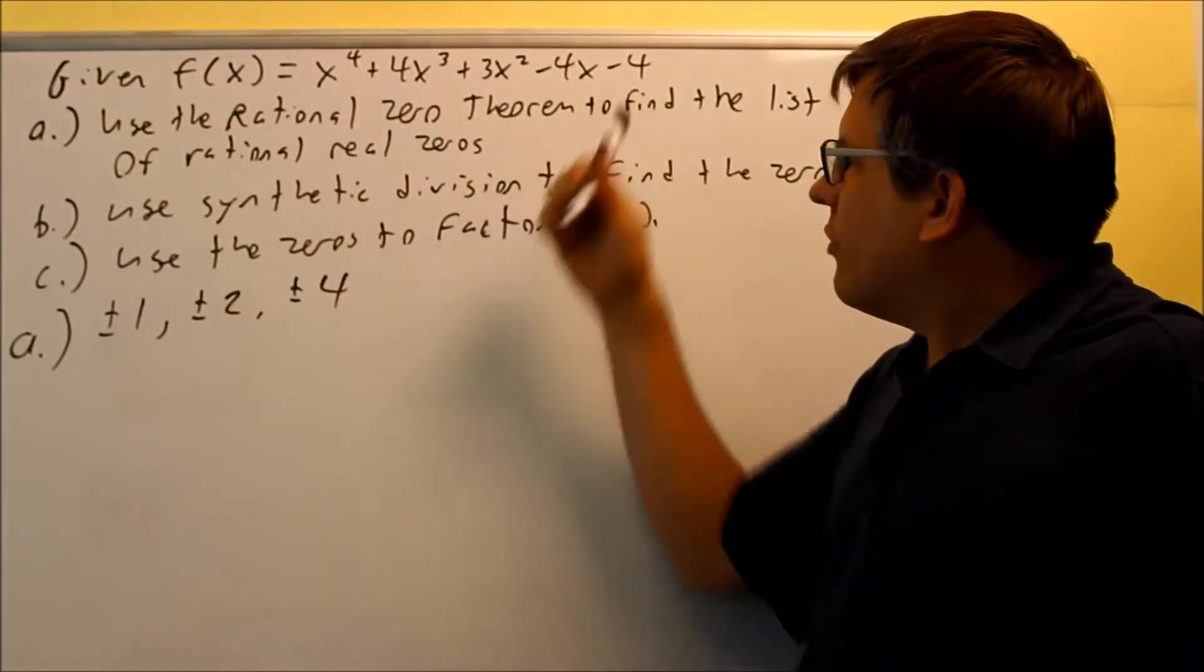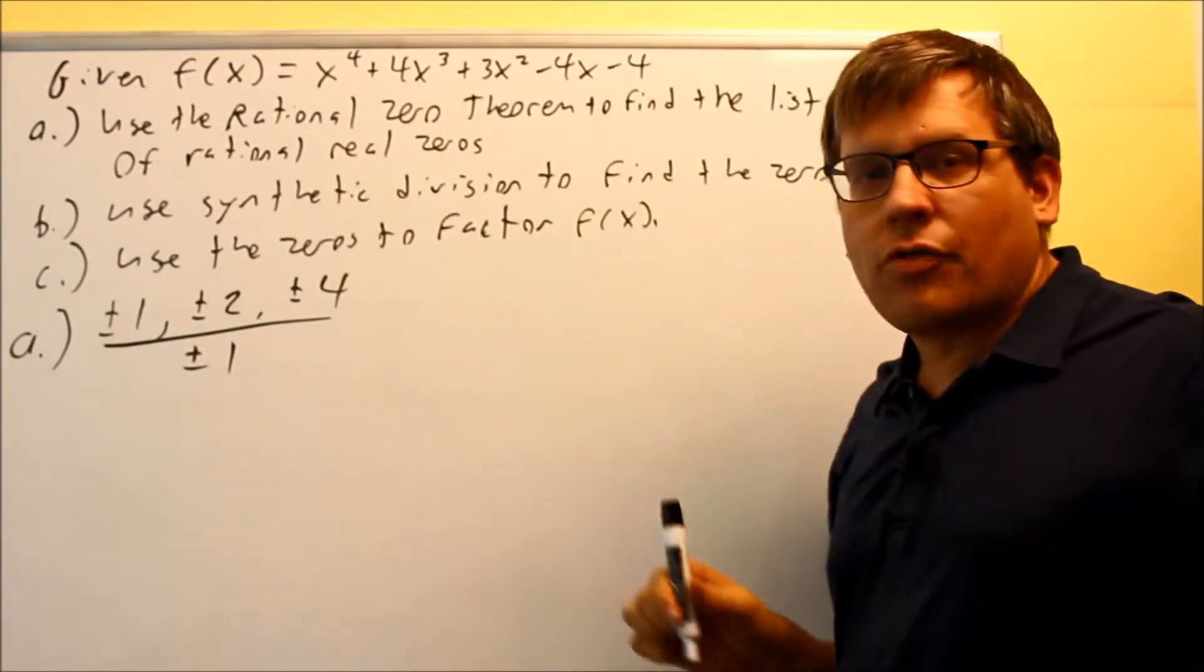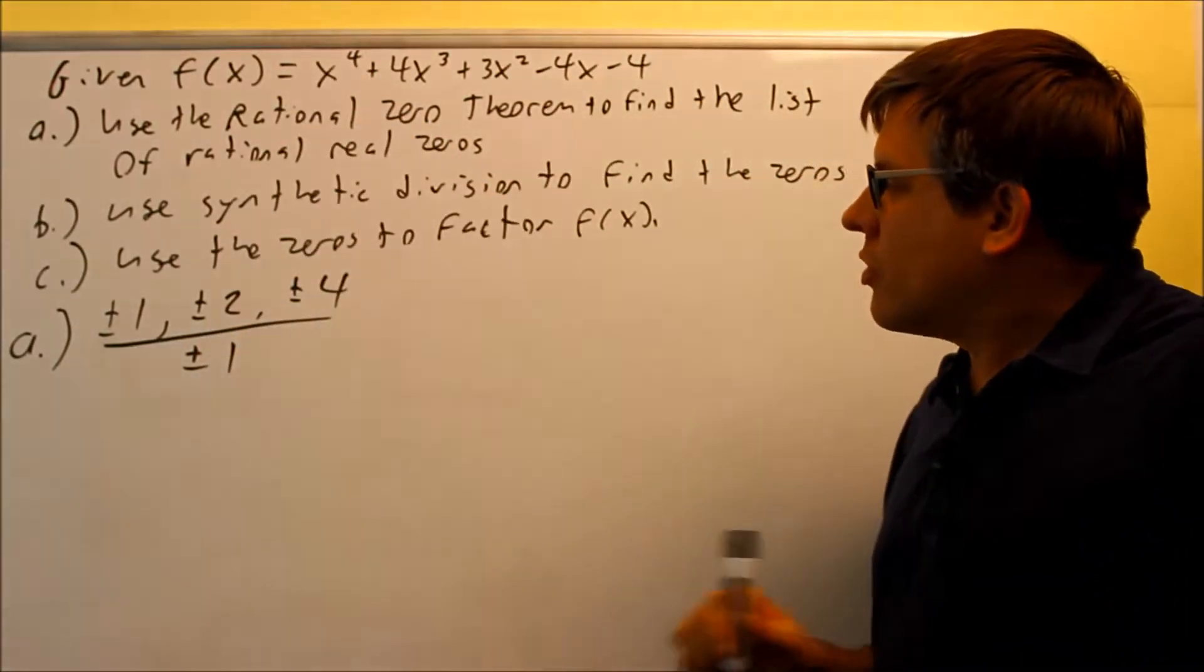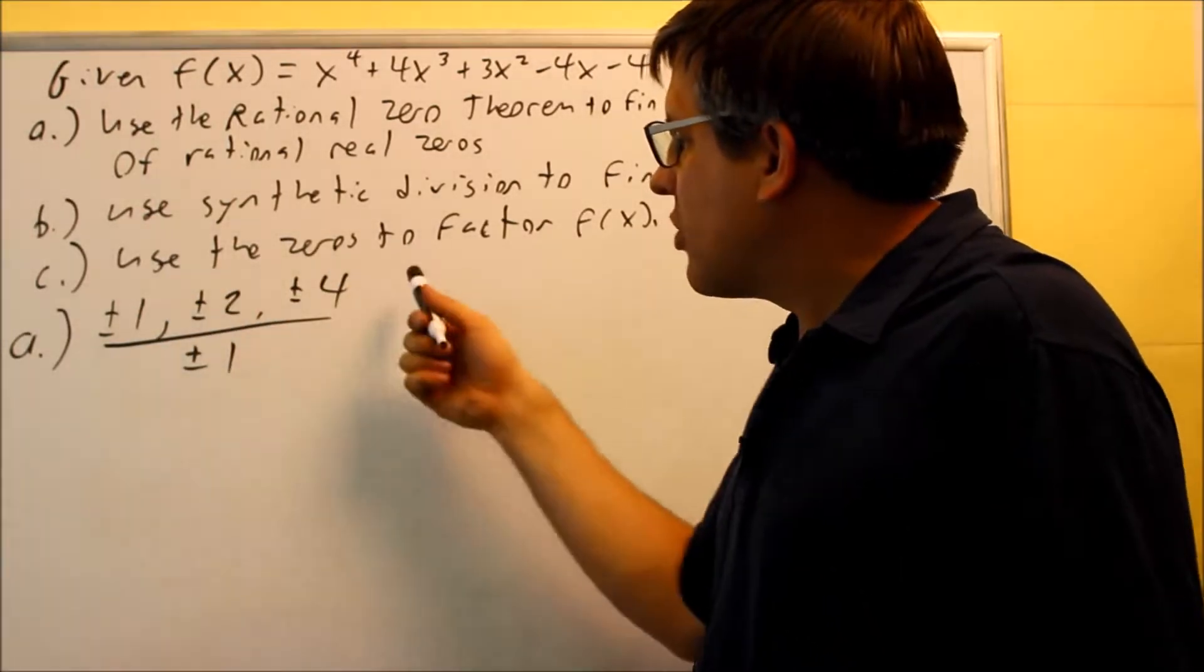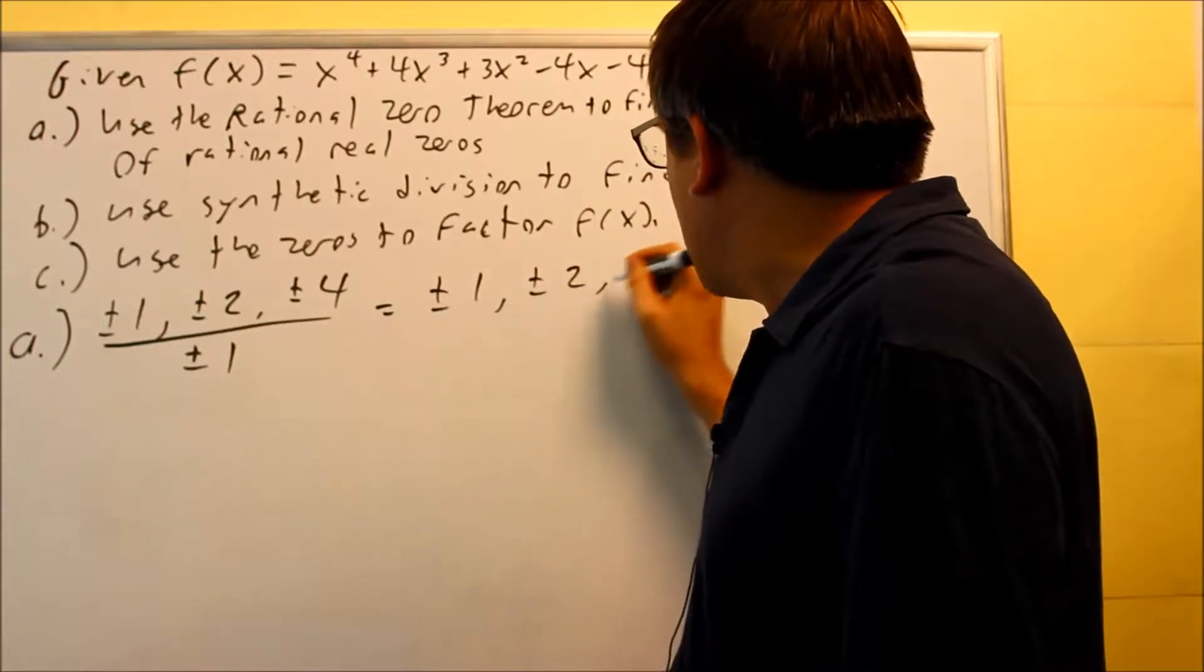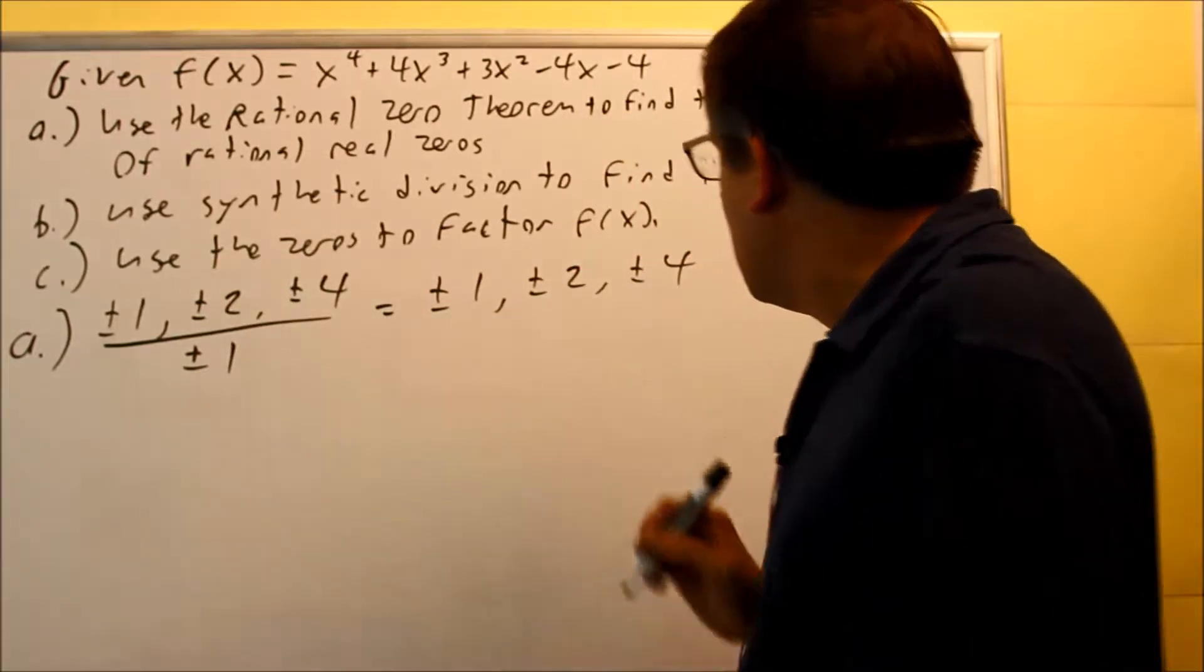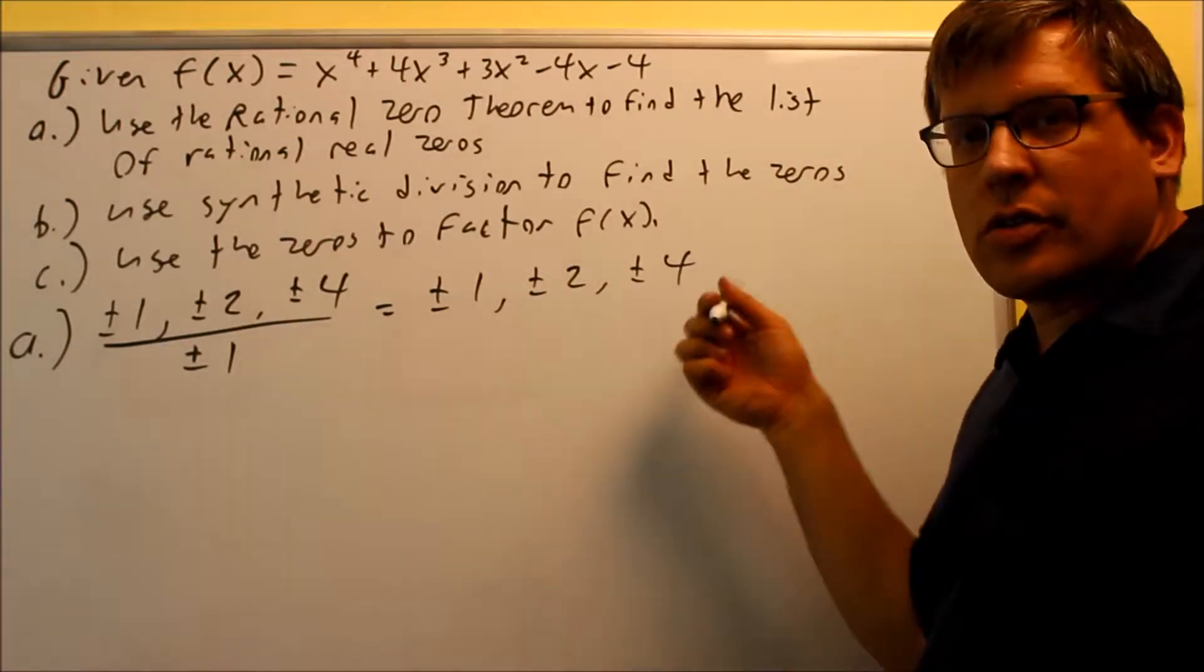Those are the numbers that divide evenly into four. You're dividing that by the factors of the first number that comes in front of the x to the fourth. So it's going to be one, two, and four over one. When you divide it, all the numbers on top divide by one. You're just going to end up with the same list again. So you have plus or minus one, plus or minus two, and plus or minus four. That's going to be all you're going to have for your list for part A.